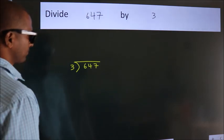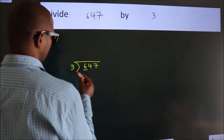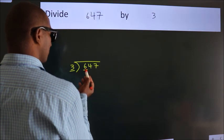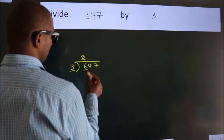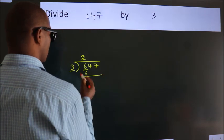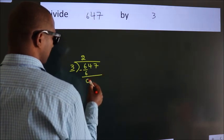Next. Here we have 6, here 3. When do we get 6? In 3 table, 3 2s, 6. Now, we should subtract. We get 0.